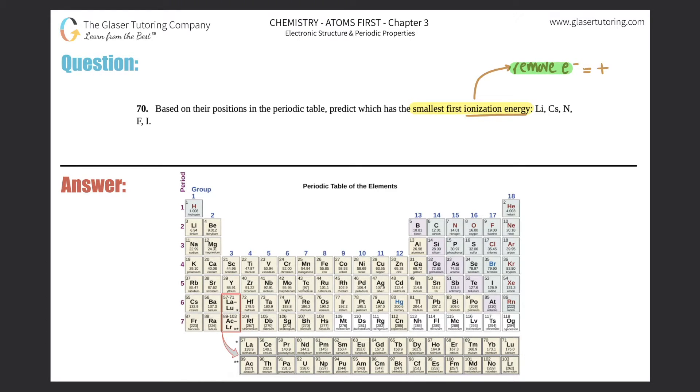We want to know which of these atoms has the smallest first ionization energy. First ionization energy implies you're only losing the first electron. A second ionization energy would be the energy needed to lose a second electron, implying you already lost one. We need to know the trends for periods and groups.